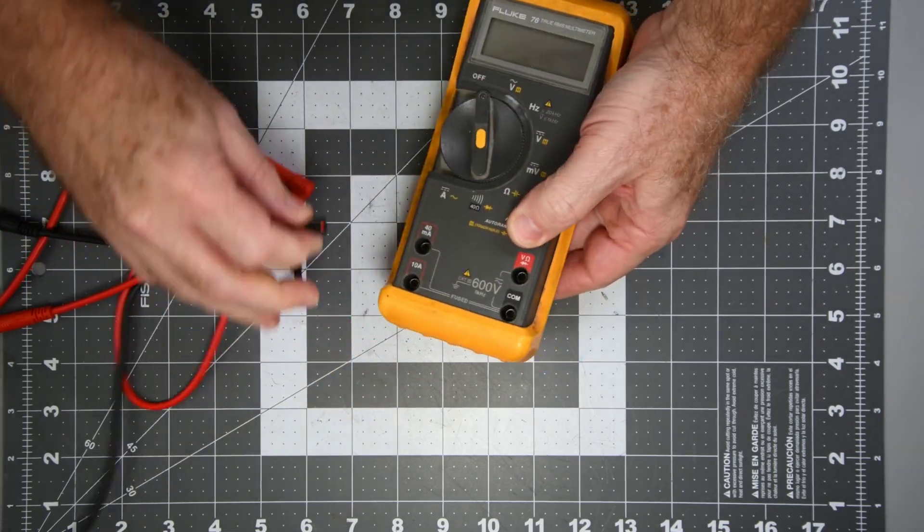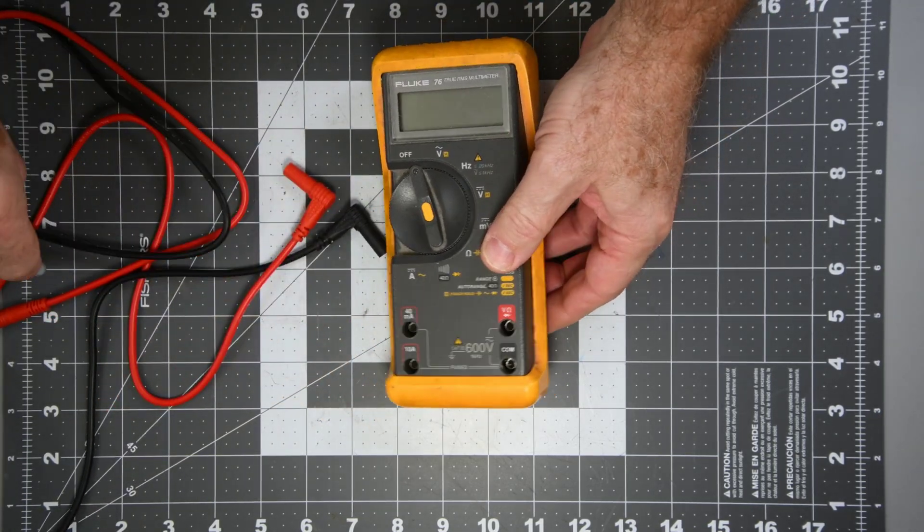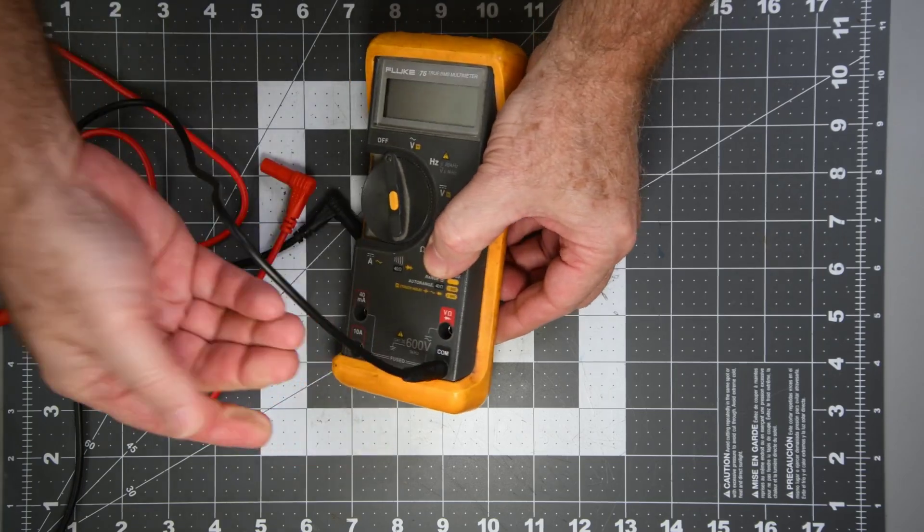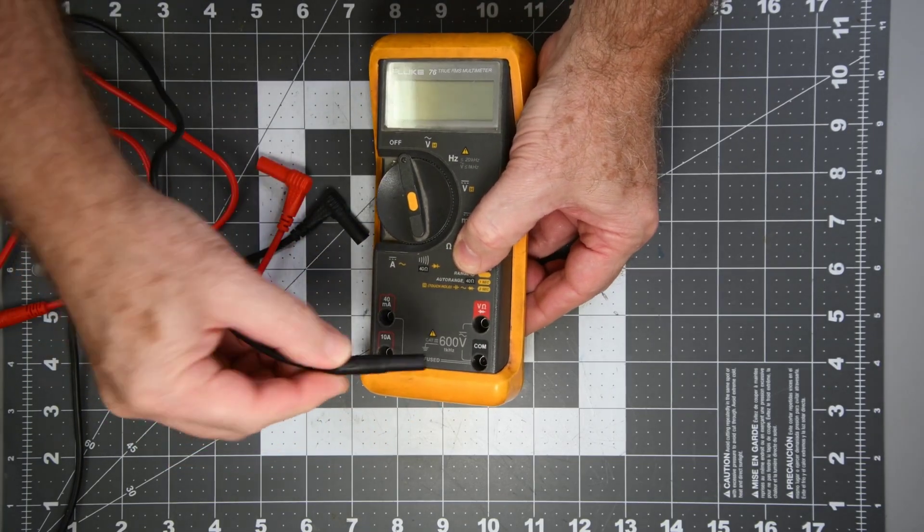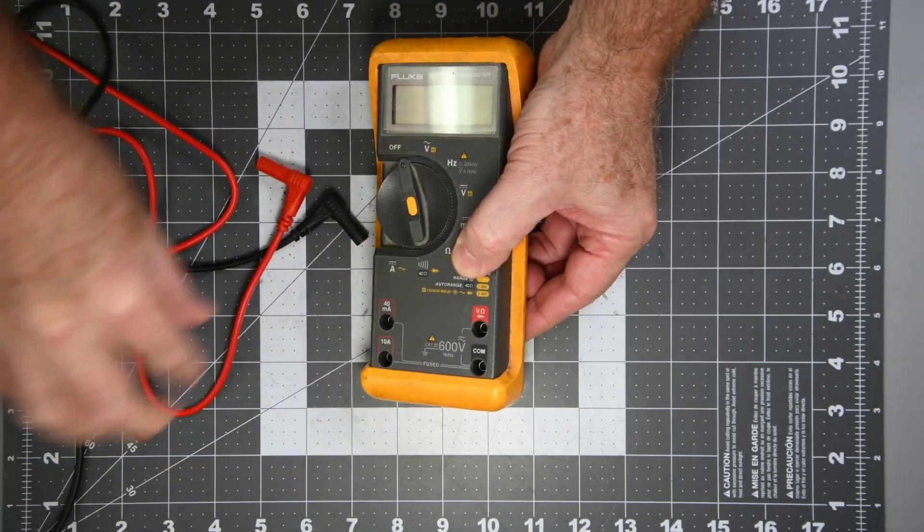Now the lead set from the Kaiweets KET-12 kit do fit the 76. It's a tiny bit tight, but it does fit. And that's what I've been using on it since the Fluke lead went bad.